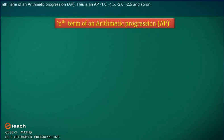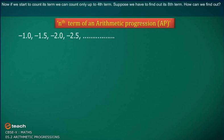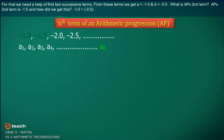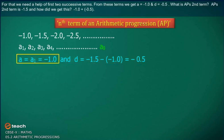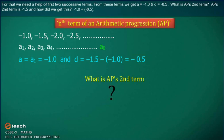Consider this AP: minus 1.0, minus 1.5, minus 2.0, minus 2.5, and so on. We can count only up to the 4th term. Suppose we have to find its 8th term. For that, we use the first two successive terms: A is equal to minus 1.0, and D is equal to minus 0.5.